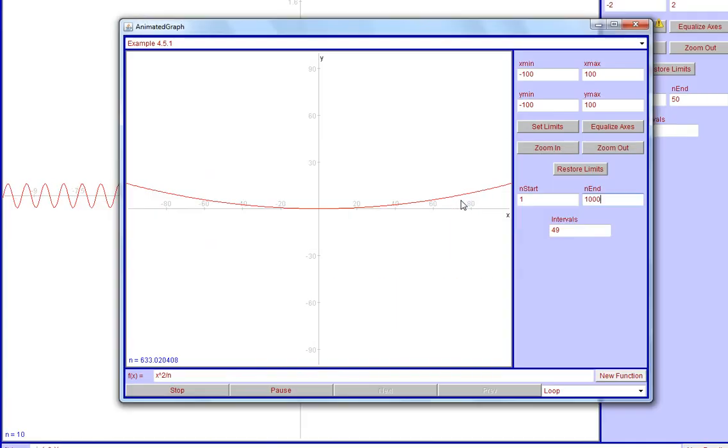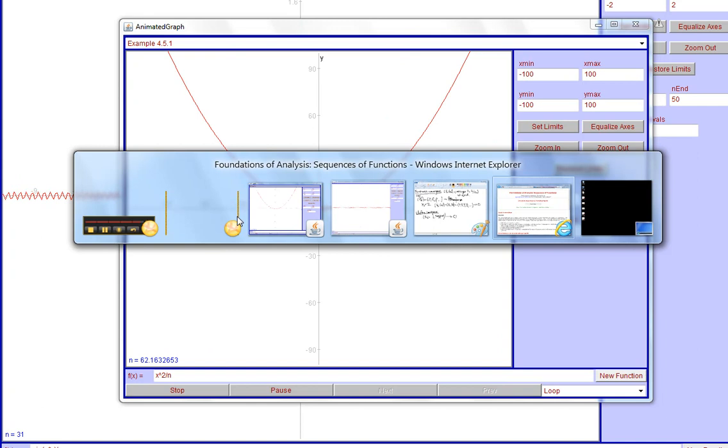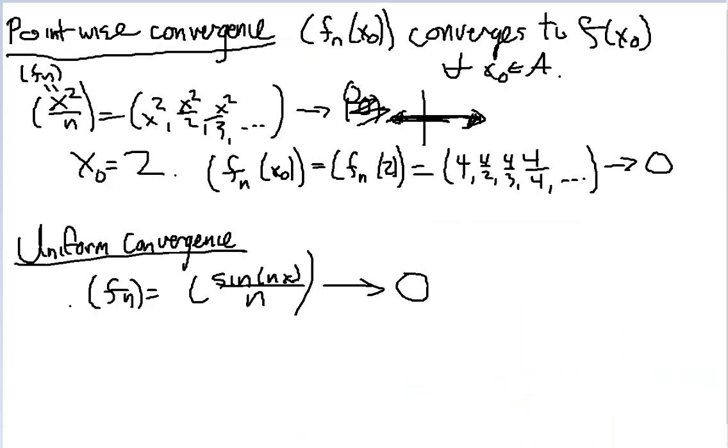But to contrast that with this, look, what we have here is, look, this is all behaving here. All this is close to zero. But this parabola is going up this way, so not everything is behaving at the same time. So that's the basic intuitive idea of what the difference between point-wise convergence and uniform convergence.